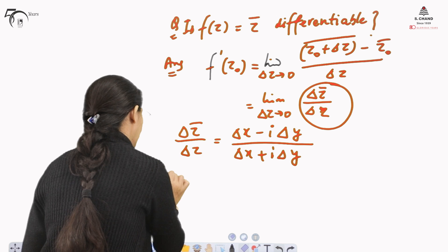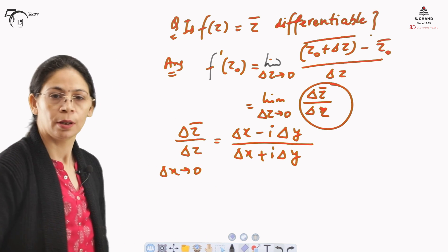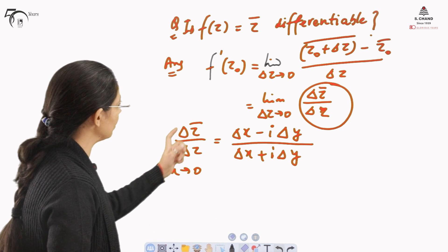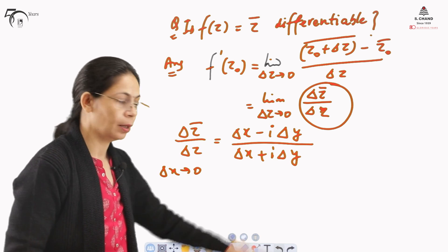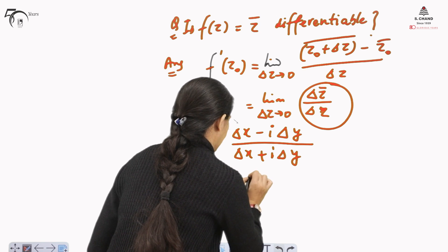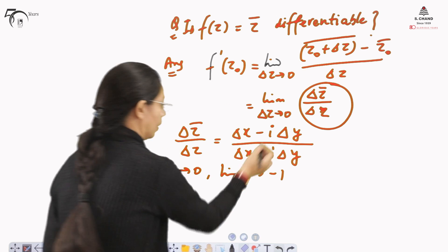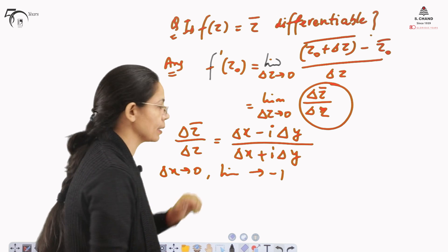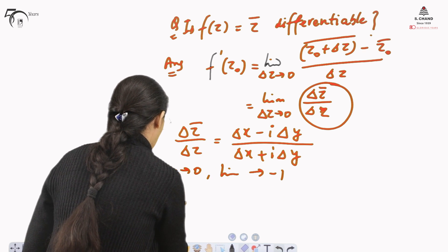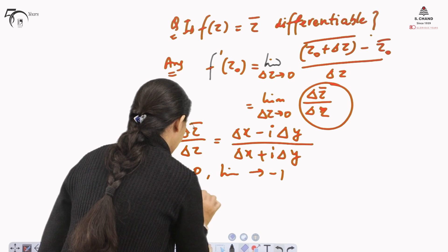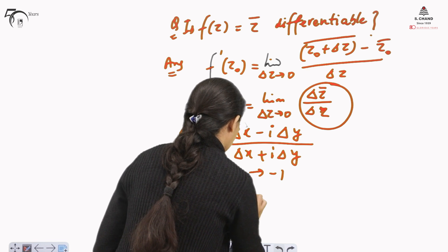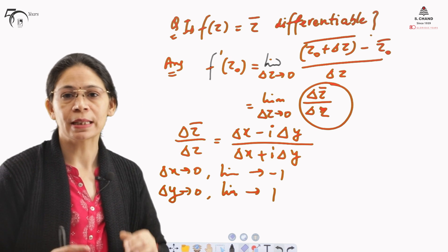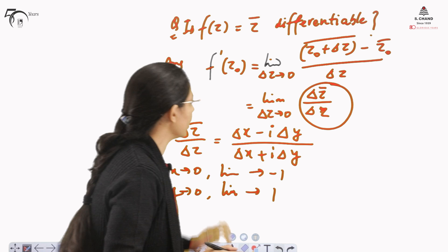If δx tends to 0 first, then the limit tends to −iδy / iδy = −1. If δy tends to 0 first, then the limit tends to δx / δx = +1. We are getting two different limits along two different paths. Therefore, the limit does not exist.